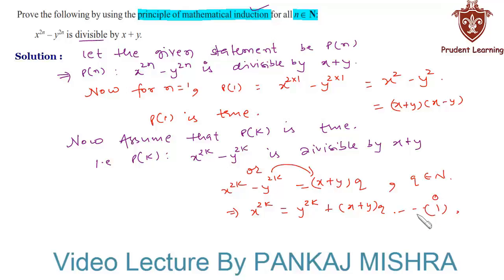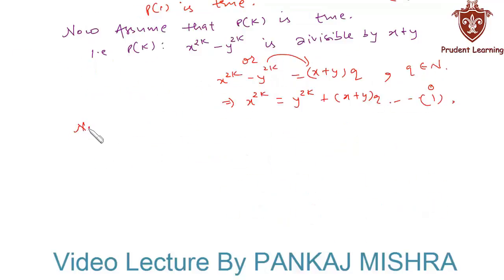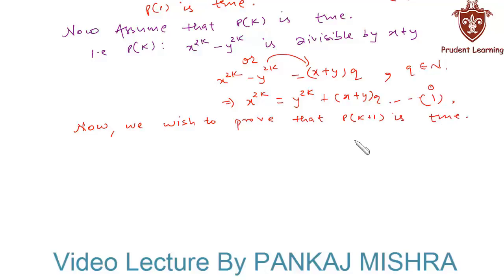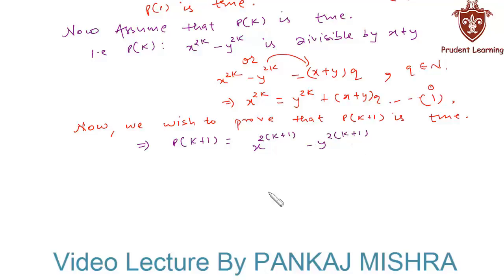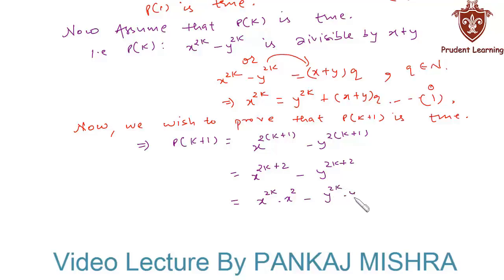In our last step, we wish to prove that P(k+1) is true whenever P(k) is true. P(k+1) equals x raised to 2(k+1) minus y raised to 2(k+1), which equals x raised to 2k+2 minus y raised to 2k+2. This can also be written as x to the power 2k times x squared minus y to the power 2k times y squared.